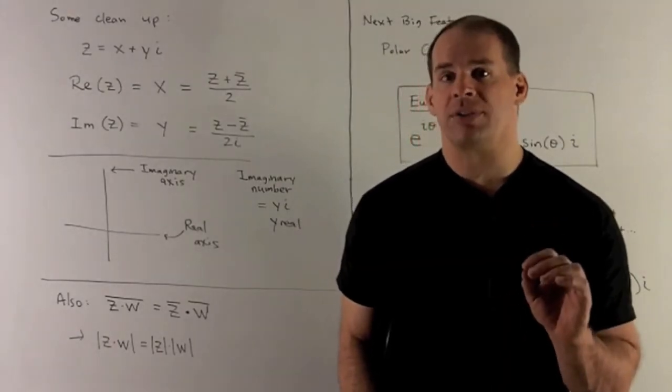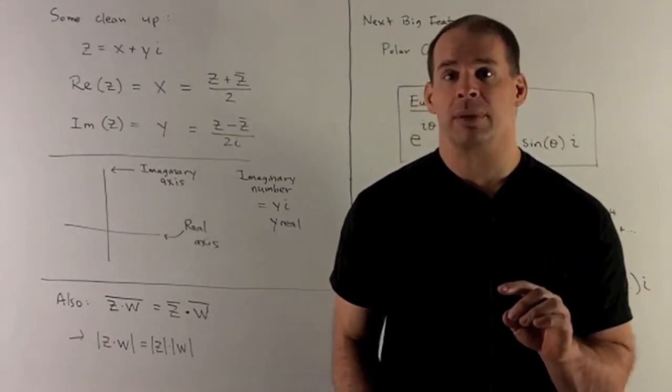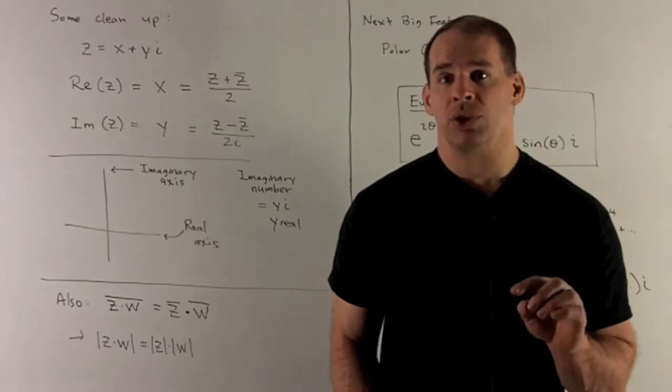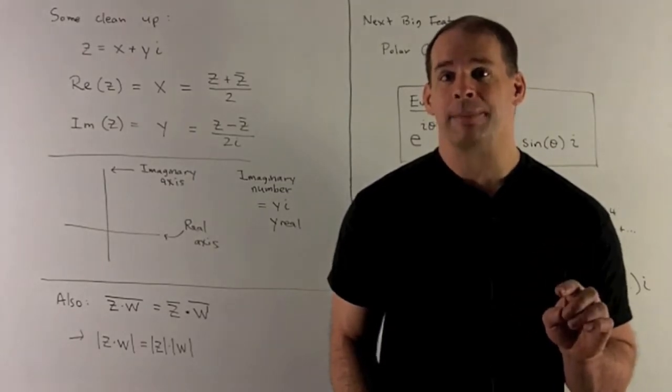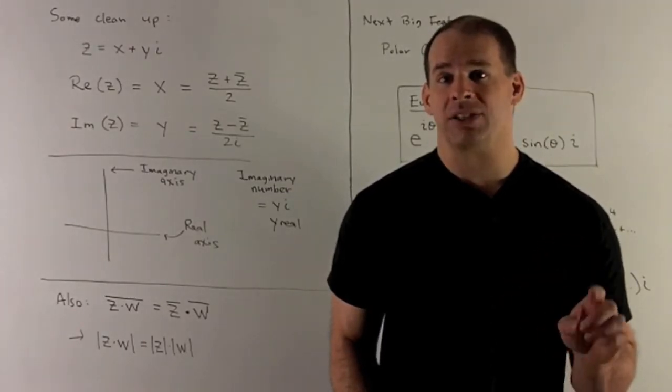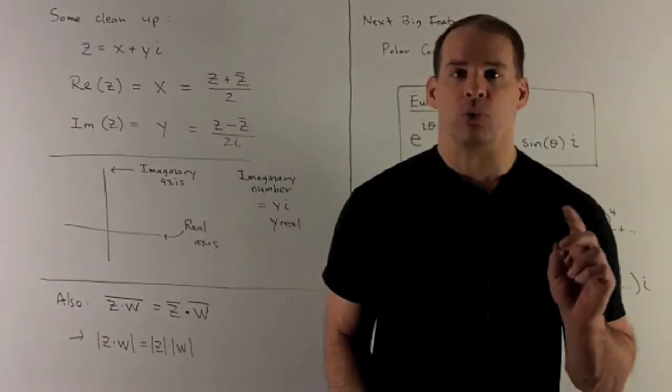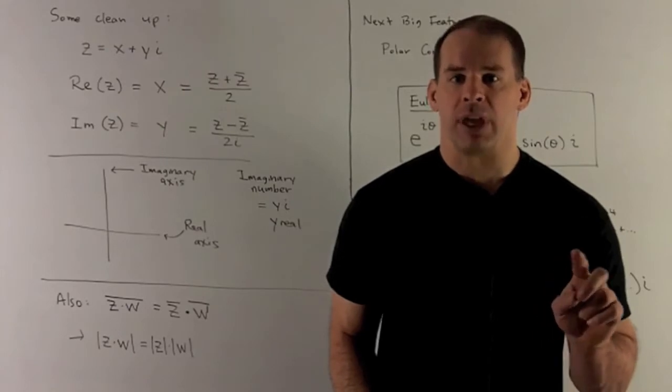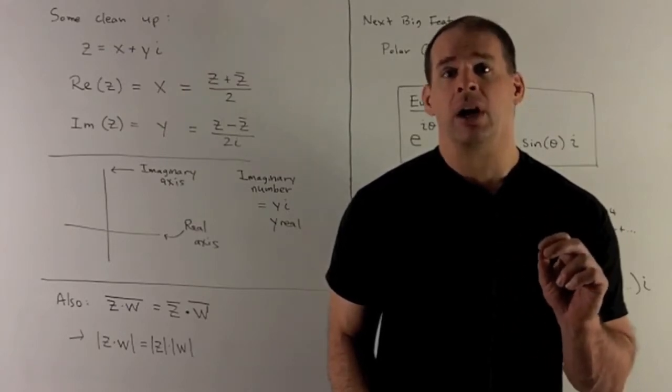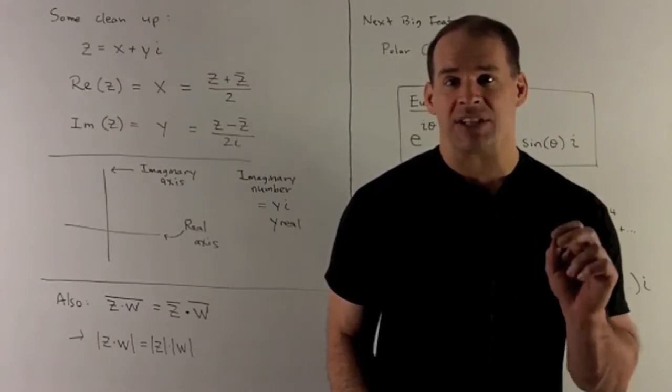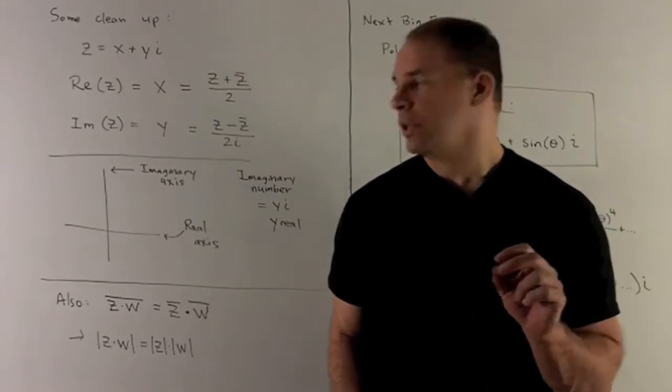For the imaginary part of z, we take the difference. That'll leave us with 2y times i. So I want to divide by 2i to isolate the y. So we get that formula there. Now, with the real and the imaginary parts, to go with this, you'll hear the real and imaginary axes in the complex plane.